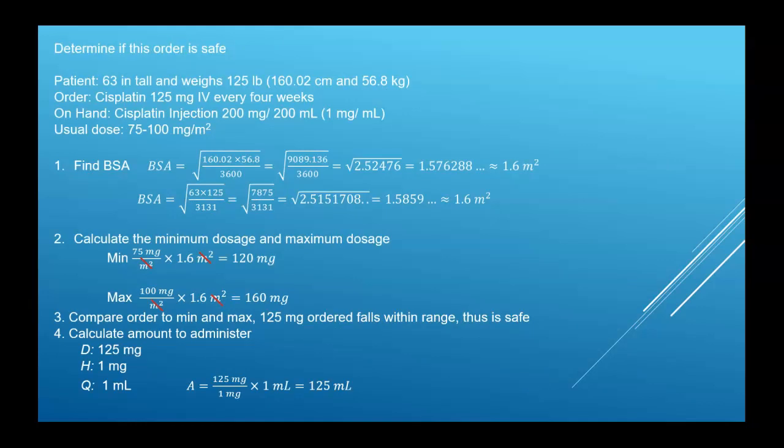Okay, so let's determine if this order is safe. Our patient is 63 inches tall and weighs 125 pounds. So I could either use the inches and the pounds or I can convert them. 63 inches is 160.02 centimeters, 125 pounds 56.8 kilograms. The order: cisplatin 125 milligrams IV every four weeks. On hand, cisplatin 200 milligram per 200 milliliters, which is the same as one milligram per one milliliter. The usual dose is 75 to 100 milligram per meter squared. So this order wasn't based on BSA. This is a direct 125 milligram order. But the usual dosage is the range, and the range is based on BSA. So we have to calculate the minimum and the maximum.